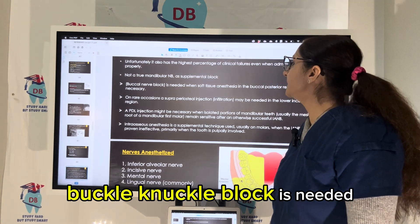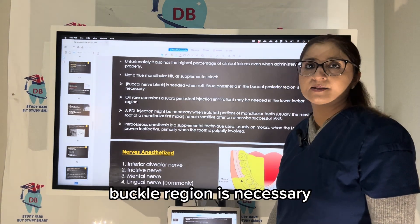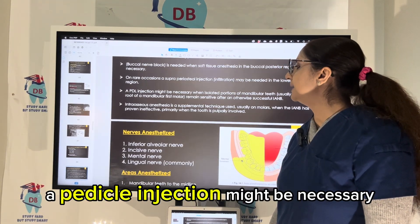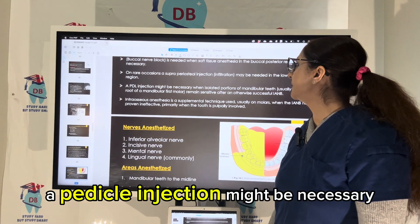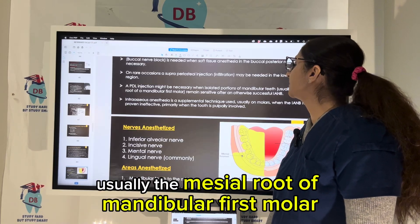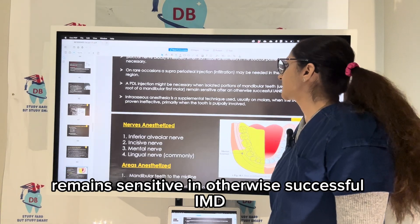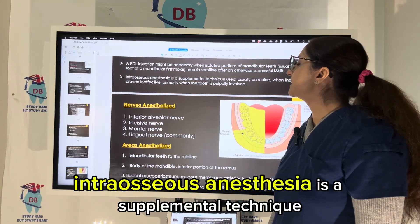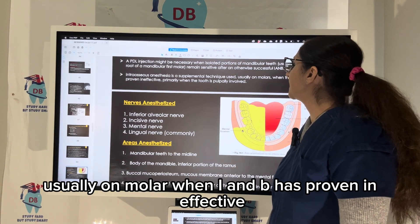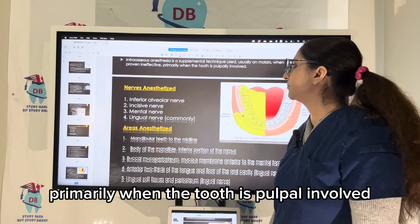The buccal nerve block is needed when soft tissue anesthesia to the posterior buccal region is necessary, like in mandibular molars. A periodontal injection might be necessary when an isolated portion of mandibular teeth — usually the mesial root of the mandibular first molar — remains sensitive in an otherwise successful IANB. Intraosseous anesthesia is a supplemental technique, usually on molars when IANB has proven ineffective, primarily when the tooth is pulpally involved.